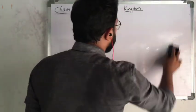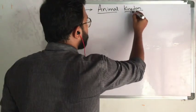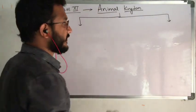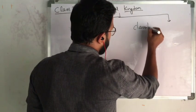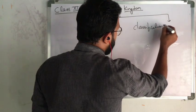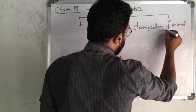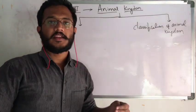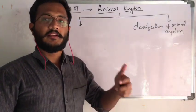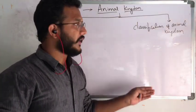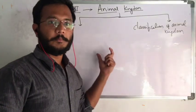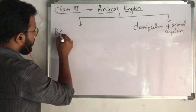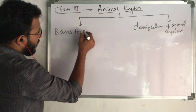While reading this chapter, first of all we have to divide the chapter into two parts. The first part is the classification of Animal Kingdom — that means, in the Animal Kingdom, how many phylums are there, how many classes, how many families, and how many species. That is the classification. But for doing that classification, what is the basis, what are the criteria, what are the characters they considered? That we have to see — that is, basis for classification.